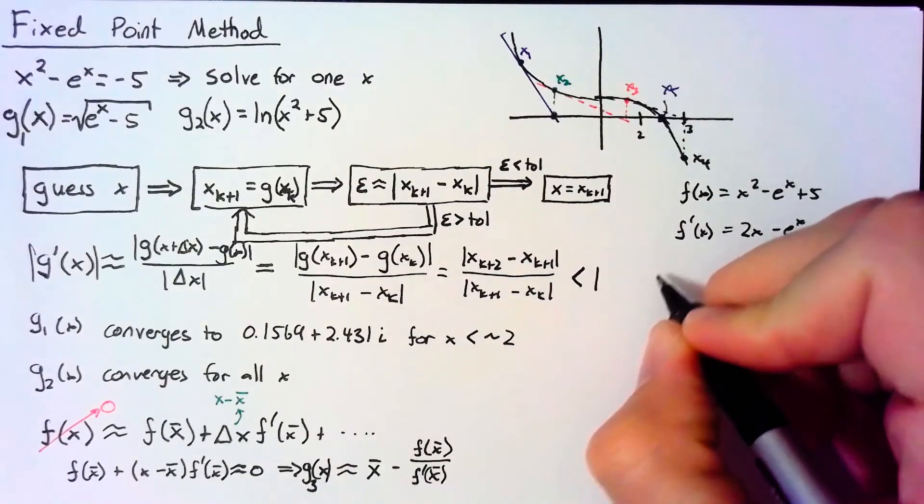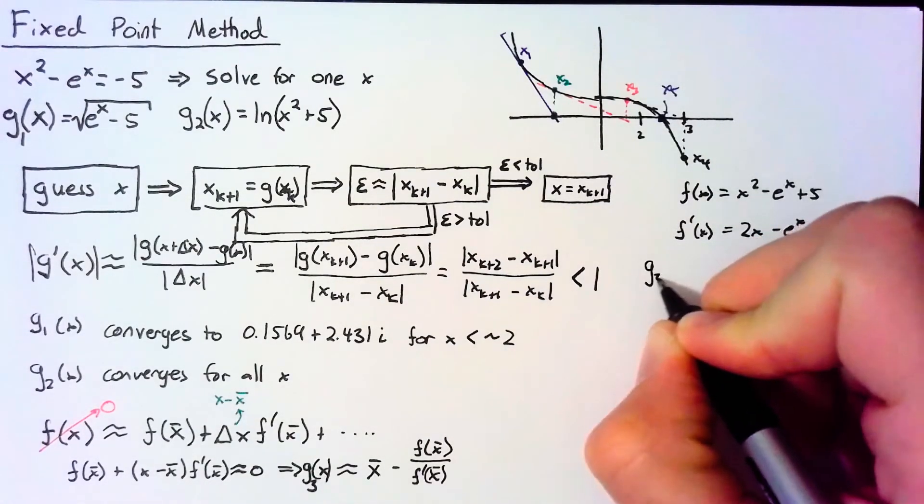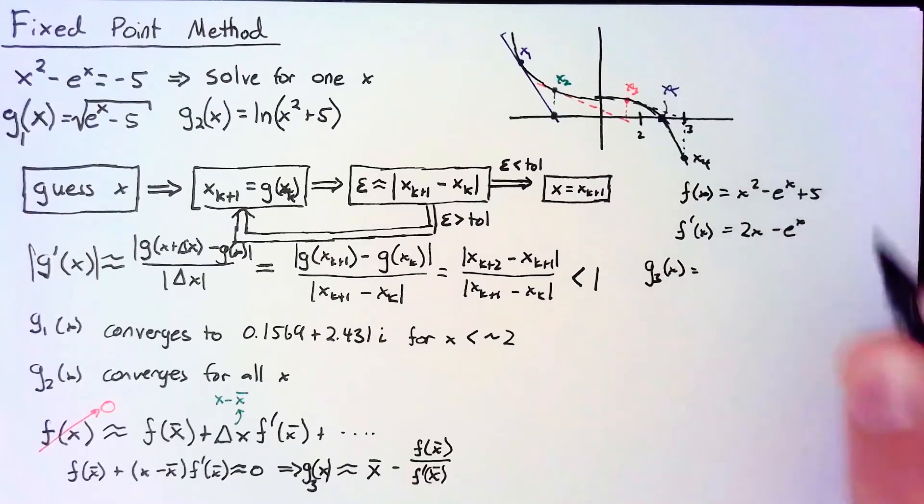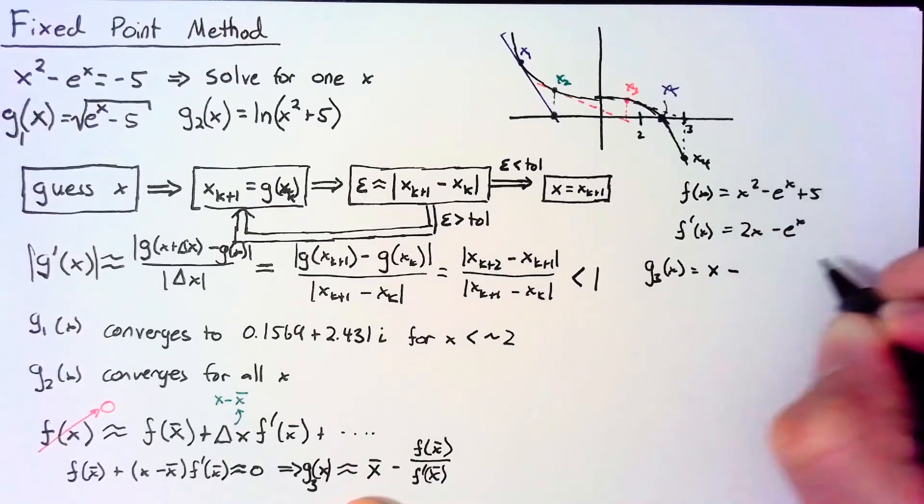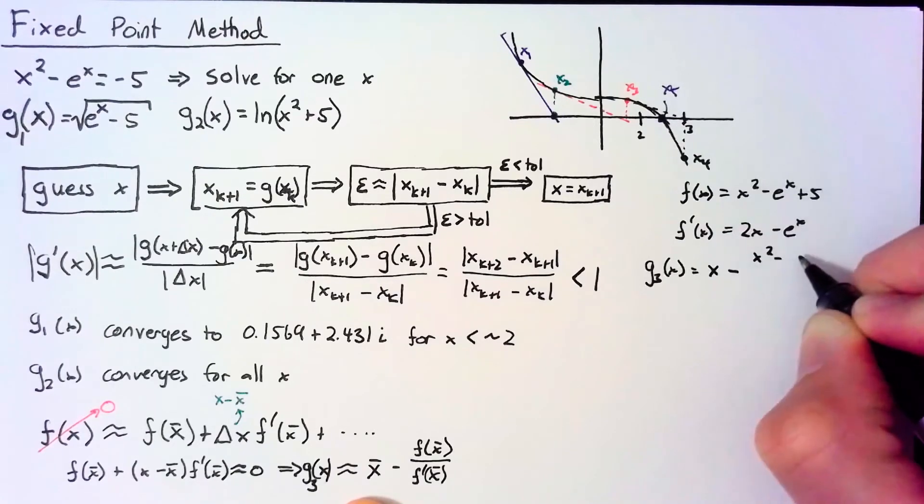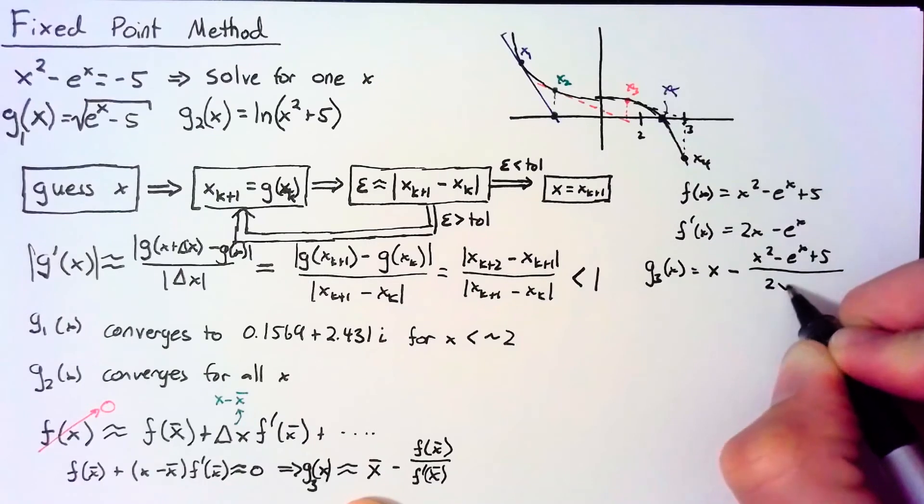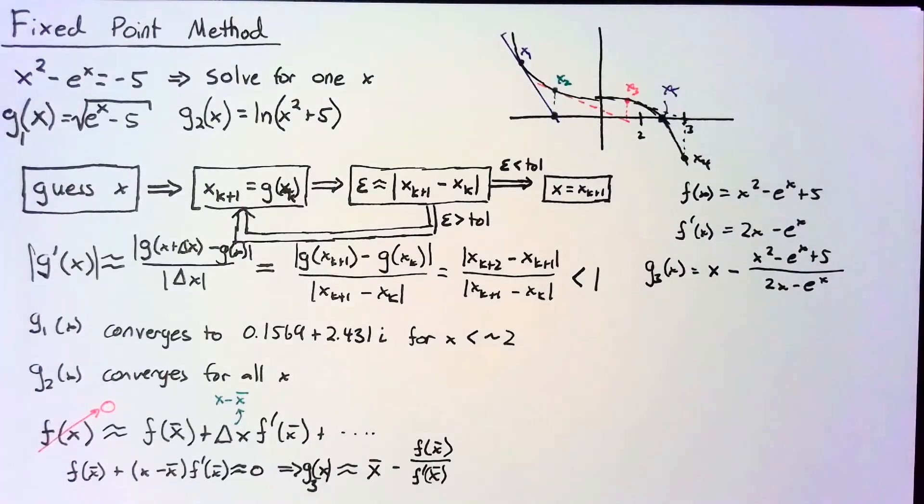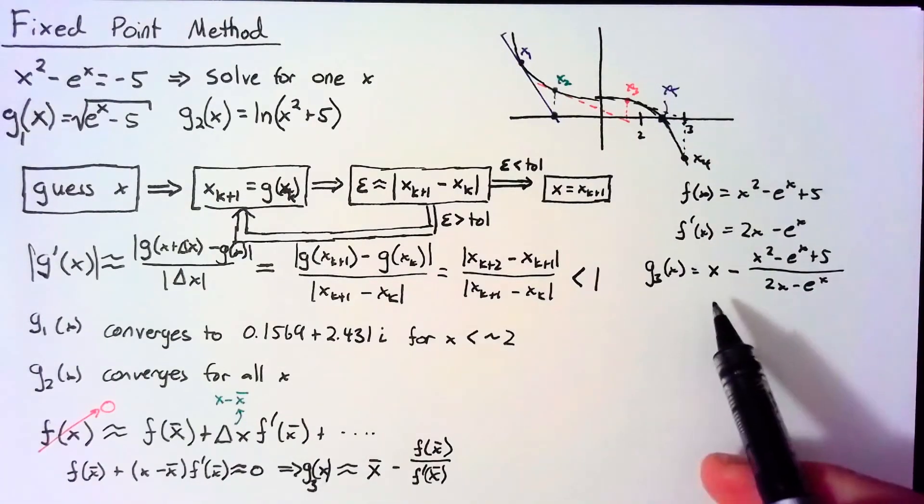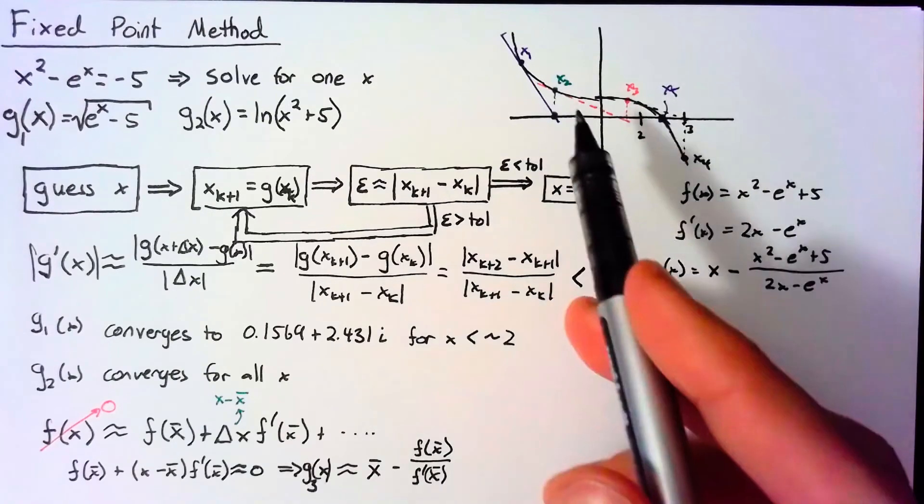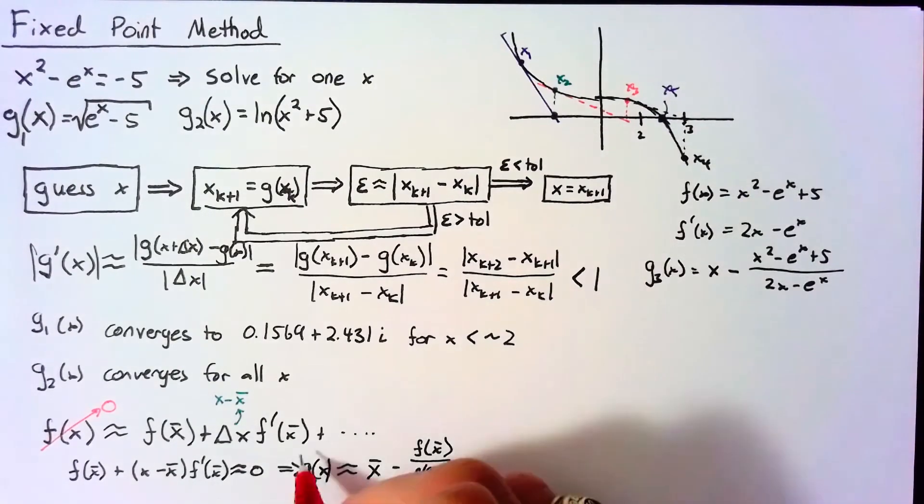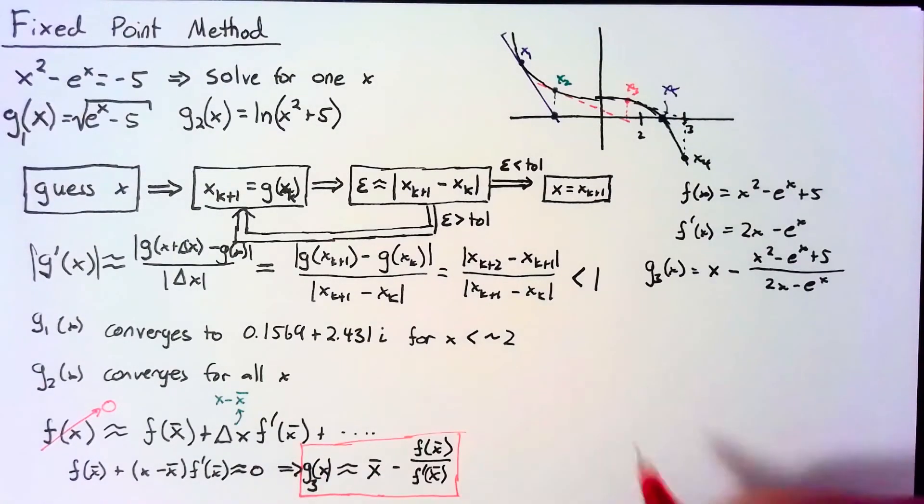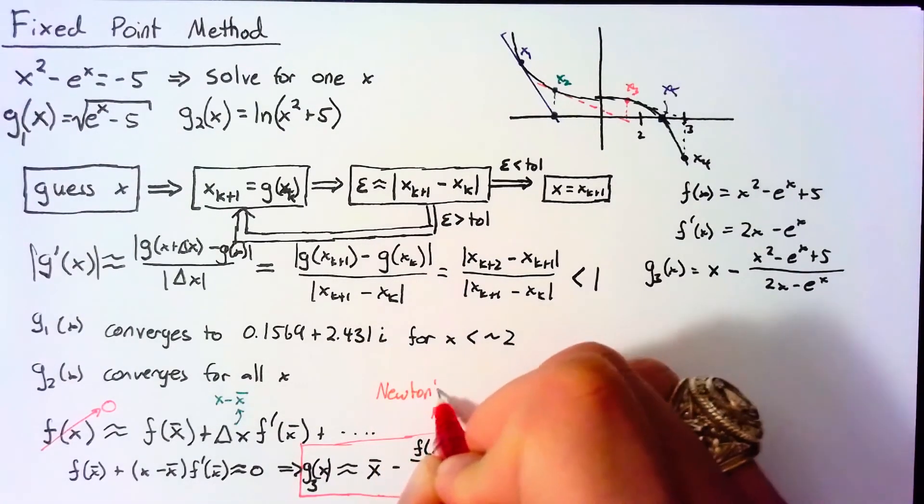The actual function we end up with is this g₃(x) = x - (x² - e^x + 5)/(2x - e^x). And I'm not going to prove it here, but for this case, g₃ actually converges for all x. This g₃(x) is a method known as Newton's method.